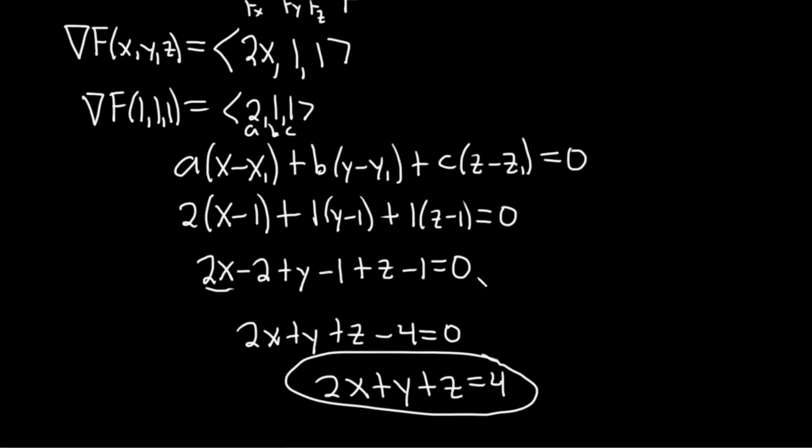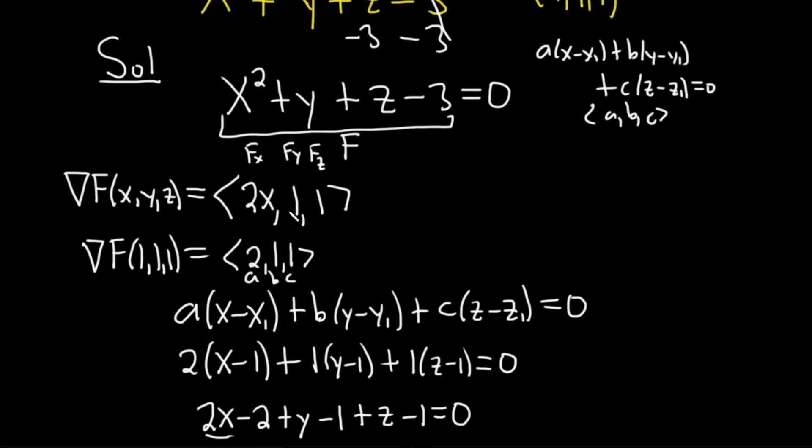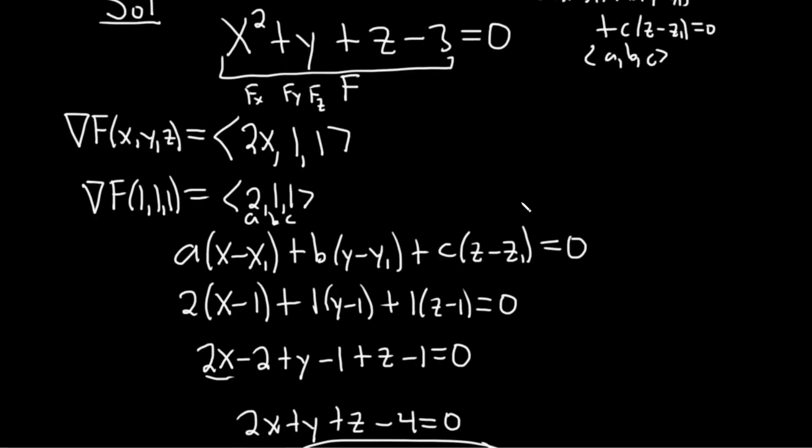And again, really not that hard. The first thing you do is just set it equal to 0. Compute the gradient. Plug in your point. And that gradient vector is going to be the normal vector for your plane. And you just plug it into the regular equation of a plane.